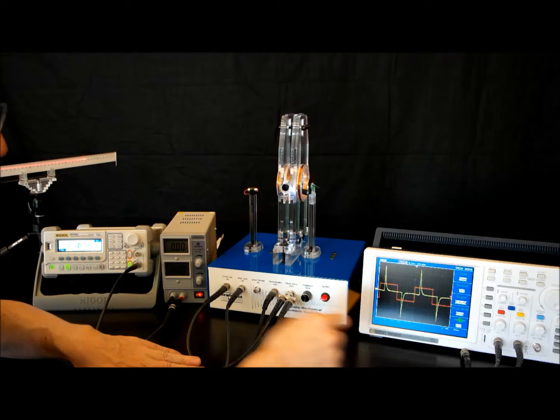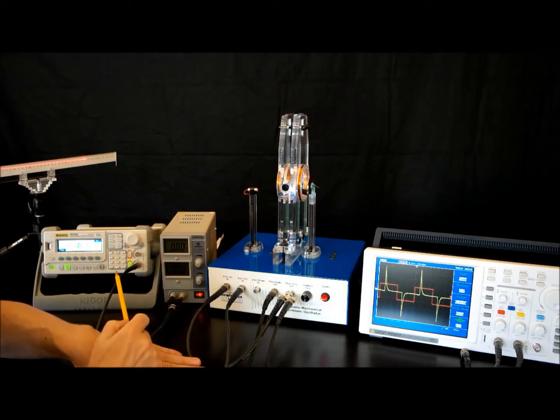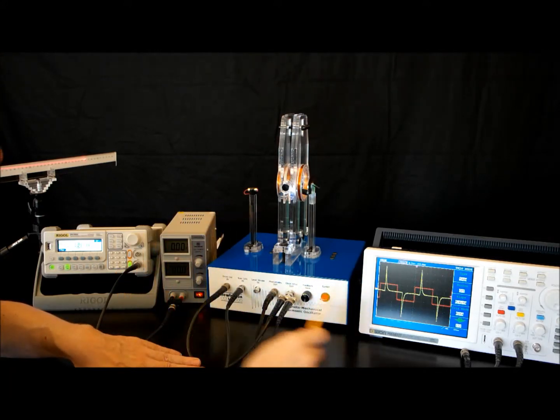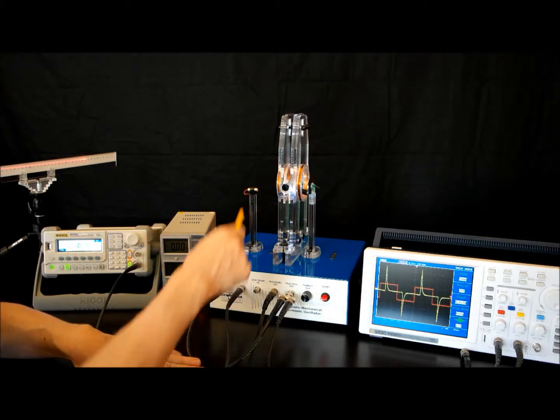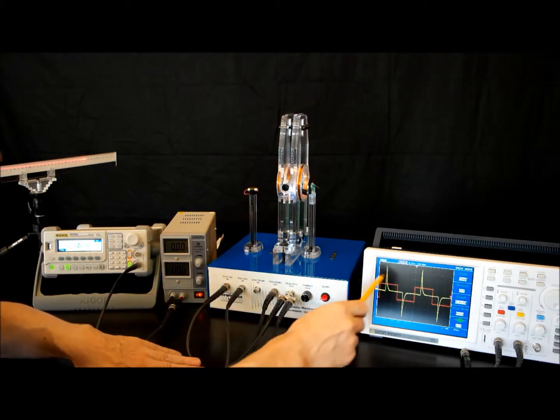Every half cycle the drive coil gets a kick, and that keeps the thing oscillating. It runs at the resonant frequency of the oscillator, and that's the yellow trace here.